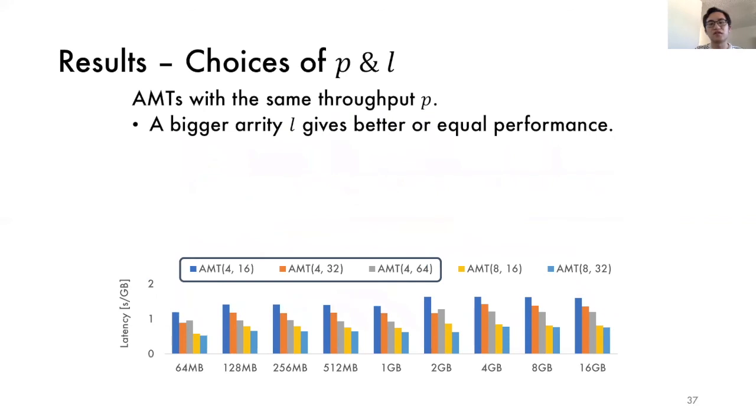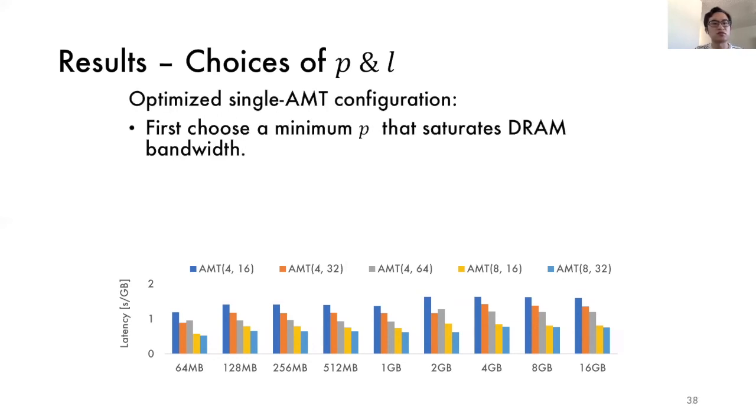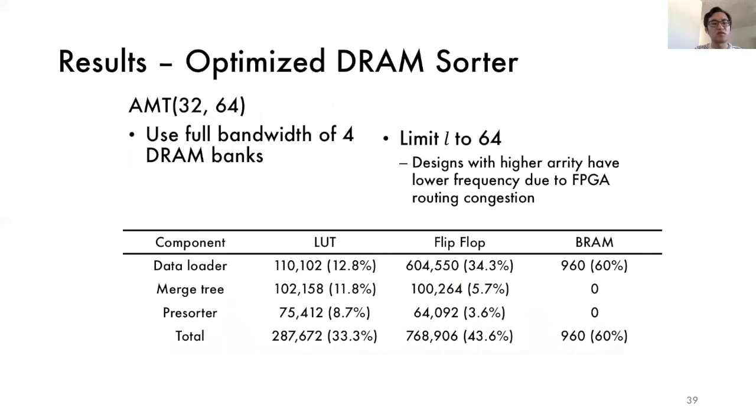Now let's come back to the question of how to choose the right P and L given the FPGA and DRAM configuration. The first observation is that when merge trees have the same throughput, the greater arity usually has better or equal performance. On the other hand, when merge trees have the same arity, the higher throughput gives better performance as long as DRAM bandwidth is not saturated. So as a result, the strategy of choosing optimized single AMT configuration is always such as below. First, we choose a minimum tree throughput P that saturates the DRAM bandwidth. Then we choose a maximum L that on-chip resources allow. The best performing design is AMT P equal to 32, L equal to 64, which corresponds to the case where all of the four DRAM banks are present. The resource utilization is also attached. Please note that although L can be even larger, here we limit L to 64 since designs with more leaves have lower frequencies due to the FPGA routing congestion.